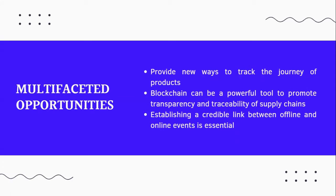Following the various scandals that have shaken the food industry in recent years, major food and retail companies are turning to blockchain not only to enhance transparency of the food supply chain but also to enable them to track tainted products quickly and help restore trust in food quality. However, establishing a credible link between offline and online events is essential and can be costly. Indeed, information added to the blockchain is only as good as the offline verification process that guarantees the relevant requirements have been met offline.